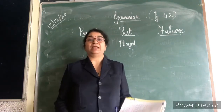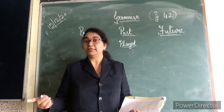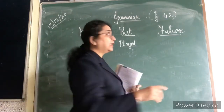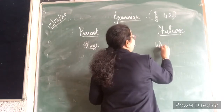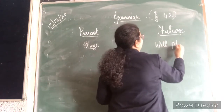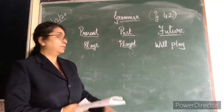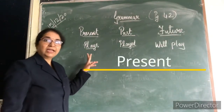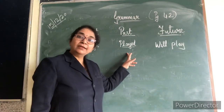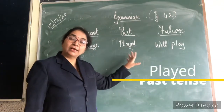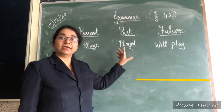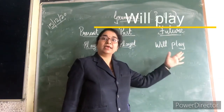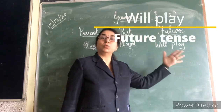Then Rani will play — she is going to play, will play in the evening or tomorrow. That will play is future. So present is plays, past is played — kheel chuki hai, and future is will play — kheel ne wali hai, she is going to play.